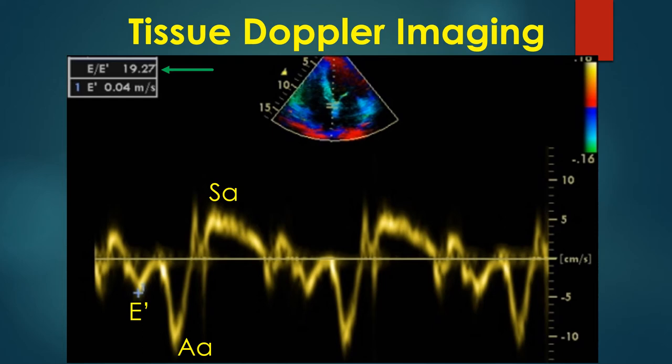The high E by E prime ratio in this case indicates left ventricular diastolic dysfunction. E by E prime at the lateral mitral annulus more than 10, and E by E prime more than 15 at the septal mitral annulus, indicates left ventricular diastolic dysfunction. E by E prime values less than 8 would indicate normal left ventricular diastolic function. The yellow tracing is pulsed wave tissue Doppler imaging.